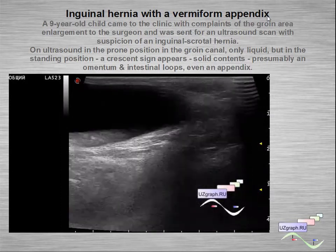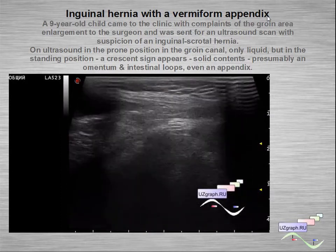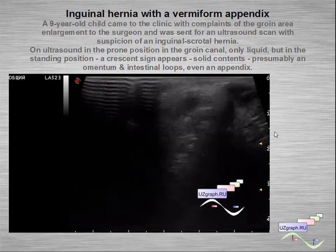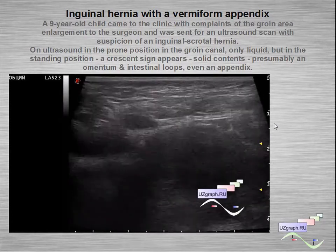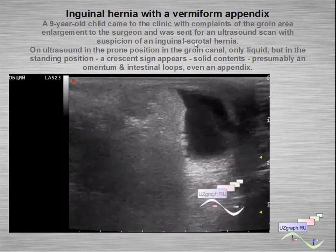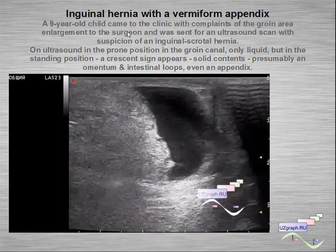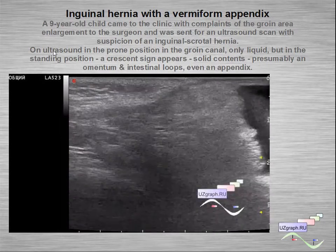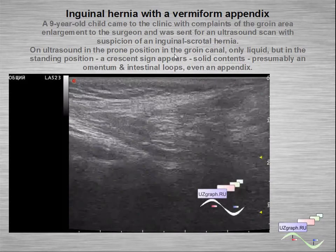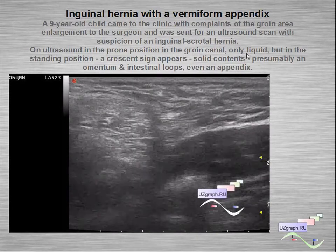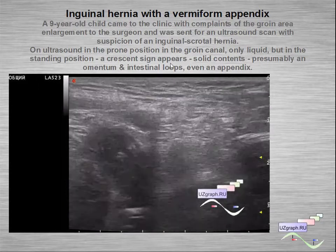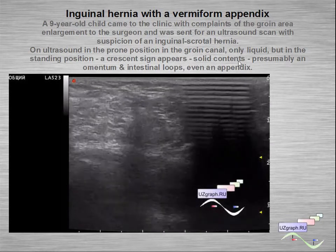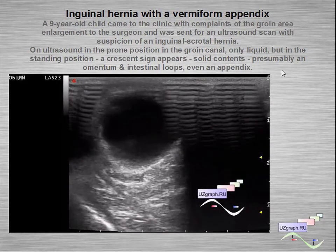Another example of inguinal hernia with a vermiform appendix: a young child came to a clinic with complaints of groin area enlargement and was sent for ultrasound after a surgeon consultation with suspicion of inguinal-scrotal hernia. On ultrasound in the supine position in the groin there is only fluid, but in the standing position we can see a crashing sign — solid content, presumably omentum, and even the appendix.